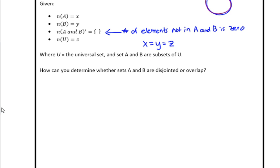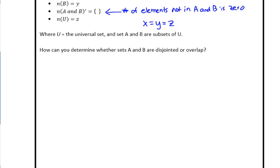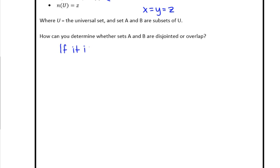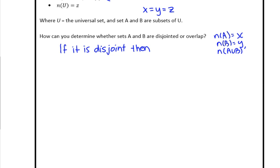So how do we determine if the actual sets are disjoint or not? Let's write some notes. If the two sets are disjoint, we're going to use these properties: the number of elements in A is X, the number of elements in B is Y, and the complement of A or B is empty set. And the number of elements in the universal set is Z. Notice this is different than above - I said 'and' for intersection, but here it's 'or.' The union is 'or.'